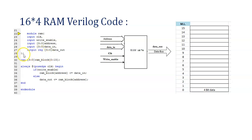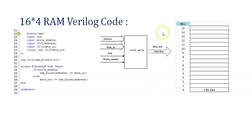After the port declarations, you need to define the memory array. For 16 locations each storing 4-bit data, you declare: reg [3:0] ram_block [0:15]. Here reg is the data type, ram_block is the name, [3:0] indicates 4-bit wide data storage, and [0:15] specifies the depth — 16 memory locations. You can modify these values as per the memory configuration you want to implement.